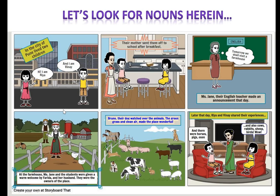In scene four, at the farmhouse, Miss Jane and the students were given a warm welcome by Farida and her husband. They were the owners of the place. In the fifth scene, we have Bruno, their dog, who watched over the animals. The green grass and clean air made the place wonderful.